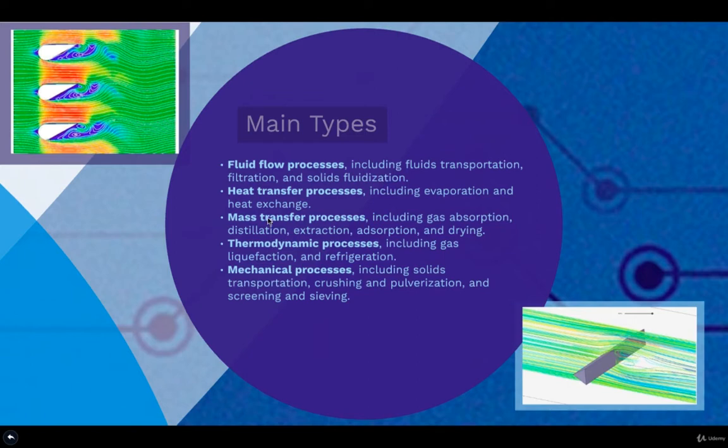We have at least four or five different types of unit operations. The first one will be fluid flow. As the name implies, fluids will be flowing through these operations. These are essentially filtration, solid fluidization or fluid transportation. For example, moving water if you're in your house and you want to take a shower. That is a unit operation and this is a fluid flow process which is going to bring water from the main pipe. It's going to be using maybe a pump up to the second floor of your room and you're going to be able to shower.